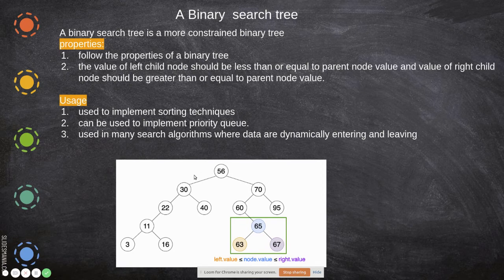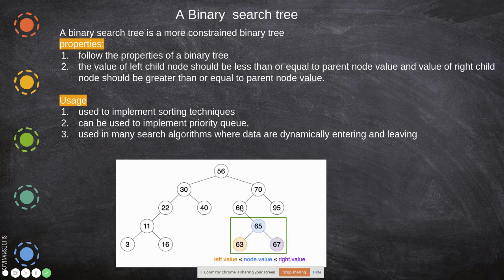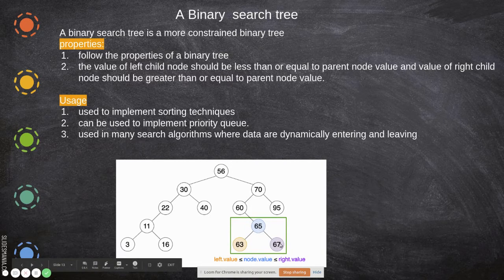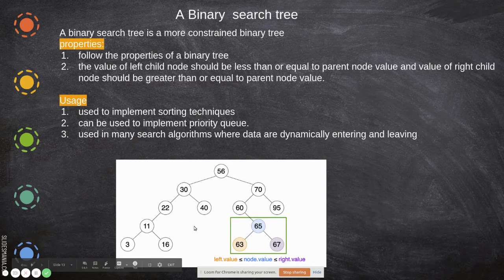For example, taking root node 56: it is more than the left child 30 but less than the right child. The left child is always smaller than the parent and the right child is always greater. This strict rule must also be followed during insertion. A left child must have a value lesser than the parent and a right child must have a value greater than the parent.